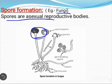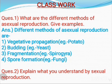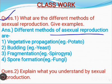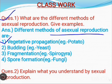So this is all about asexual reproduction and the different modes of asexual reproduction. Now come to the classwork. Your classwork contains three questions. First one is: what are the different methods of asexual reproduction — give examples. The different methods of asexual reproduction are: first one is vegetative propagation. Vegetative propagation is the ability of a plant to produce new plants from vegetative parts of the plant. Vegetative propagation is of two types — first one is natural vegetative propagation.